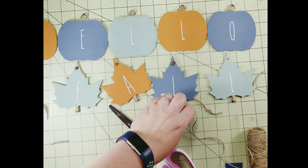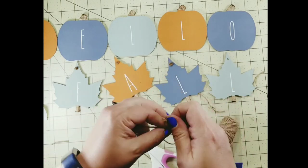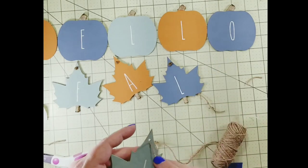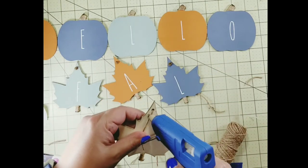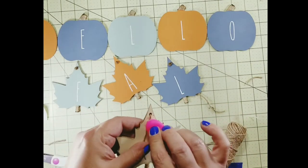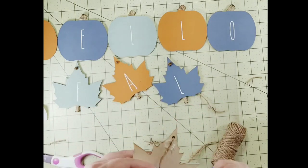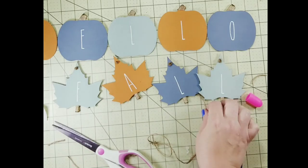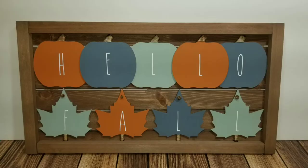Now the last part of my tutorial got cut off so I don't have video footage showing you how I added the pumpkins and the leaves to the sign. But basically what I did was I added the two end pumpkins, the H and the O, and then added the L in the middle. And then I added the E and the L overlapping on top of the other three pumpkins and hot glued the fall down at the bottom.